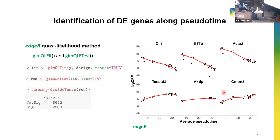Now with the design matrix, we use edgeR to perform the time course analysis to identify DE genes along pseudo-time. We use the edgeR quasi-likelihood F-test method, fitting the log-linear model and testing the second through fourth coefficients to identify differentially expressed genes. We identified approximately 2800 DE genes. Since the second coefficient shows the linear trend, we can determine which genes are down-regulated and which are up-regulated along pseudo-time.